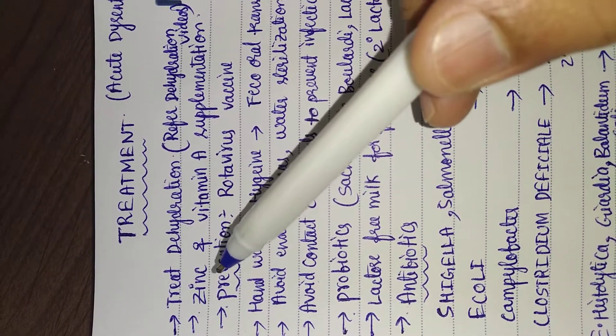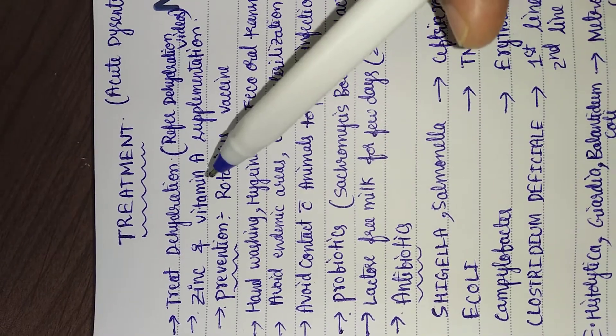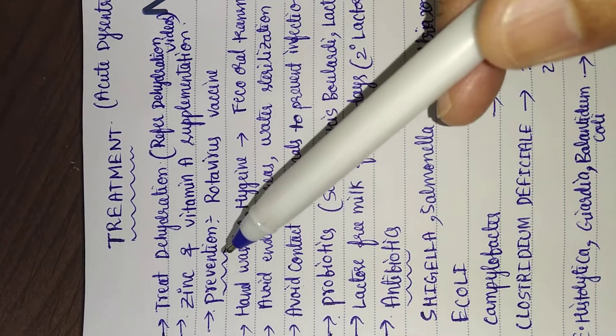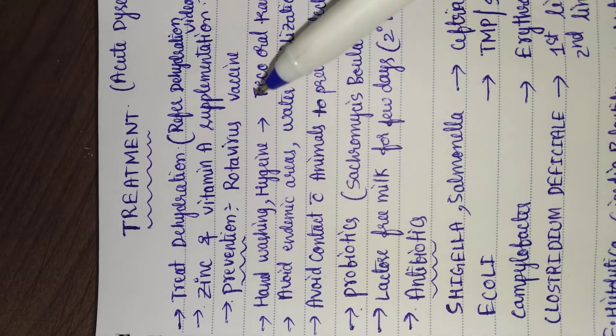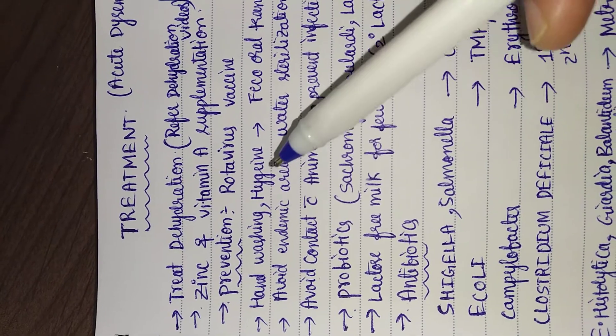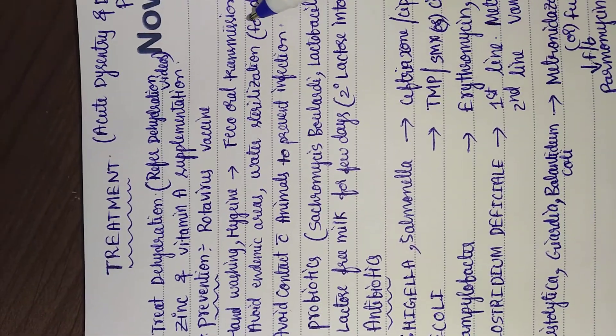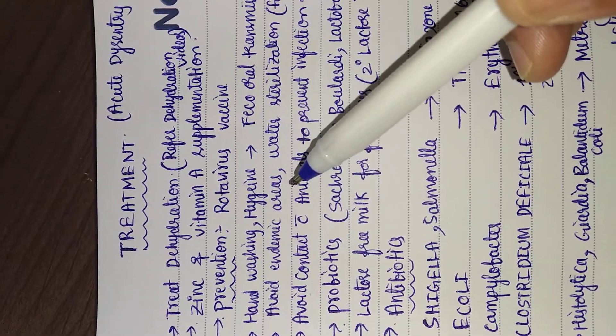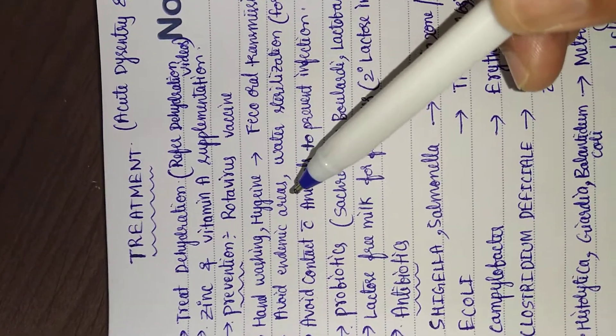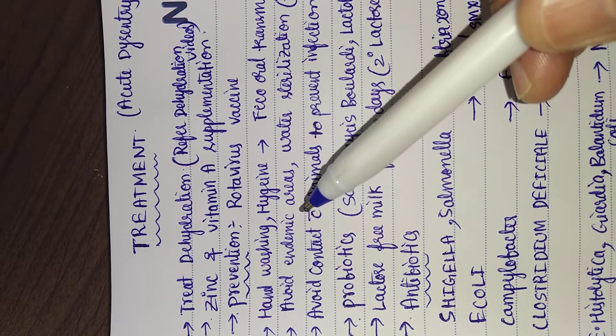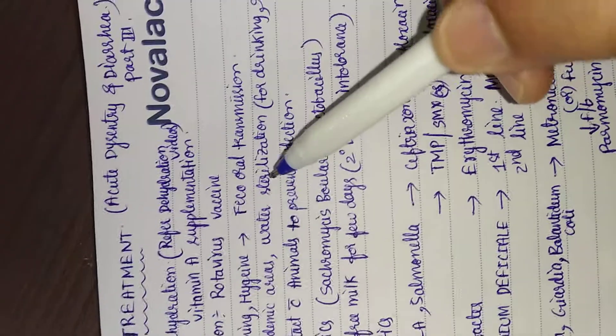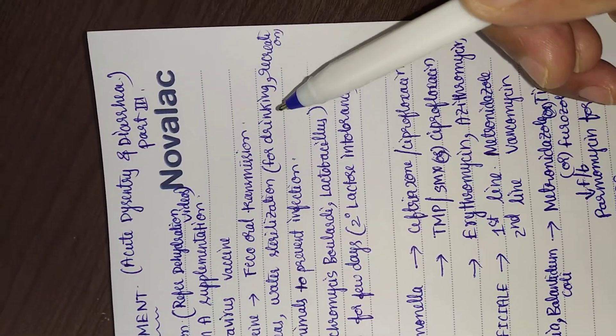These two mainly help in epithelialization. Prevention by rotavirus vaccine and also by hand washing hygiene to prevent fecal-oral transmission. Avoid endemic areas like for Giardia and Entamoeba histolytica, and water sterilization for drinking and recreation purpose.